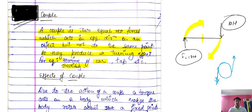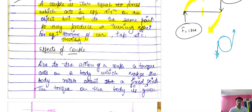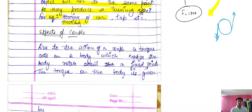This type of system is known as a couple. What is the effect of a couple? Due to the action of a couple, a torque acts on a body which makes the body rotate about a fixed point.